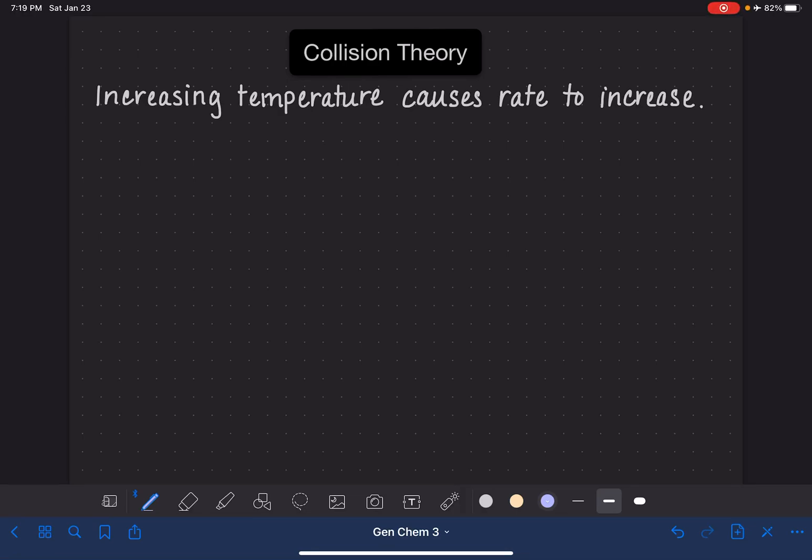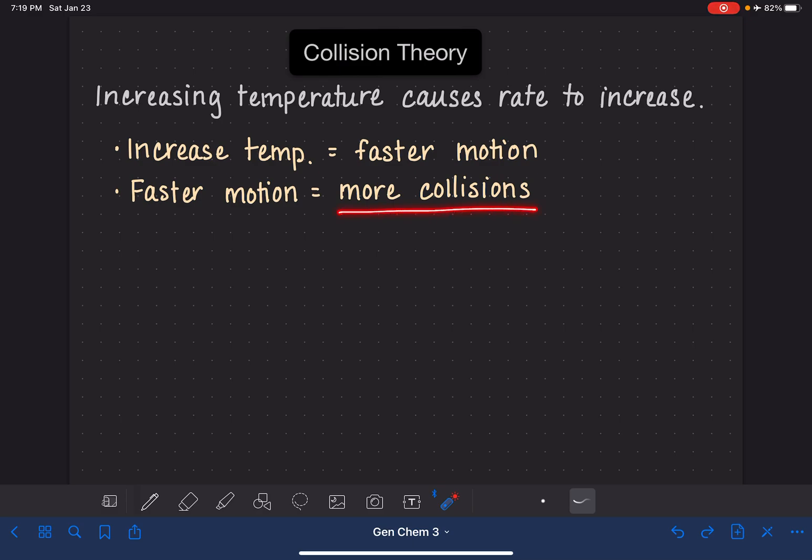Increasing the temperature causes the rate of a reaction to increase. This is because increasing the temperature causes molecules to move faster, and as molecules move faster they collide more frequently. Collisions are necessary for a chemical reaction to take place.